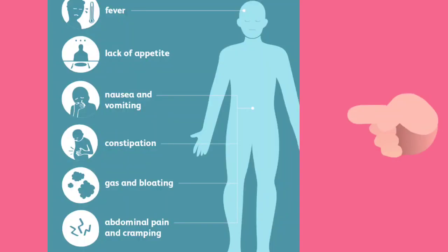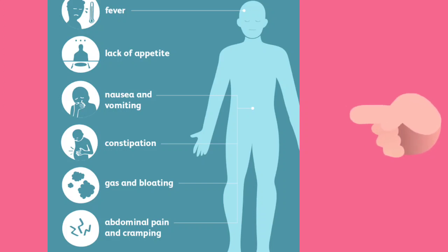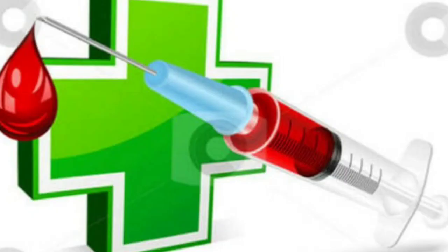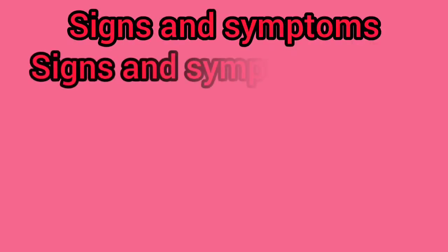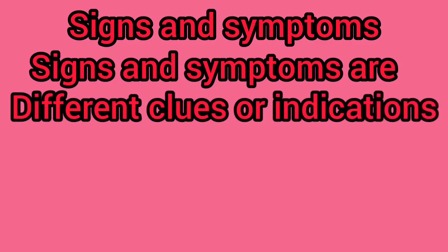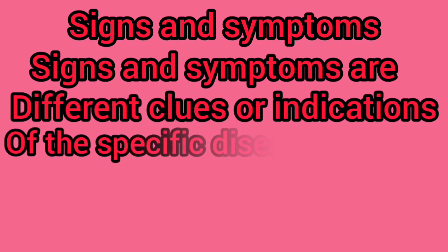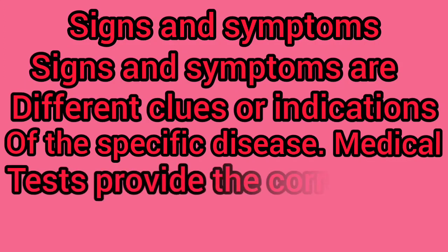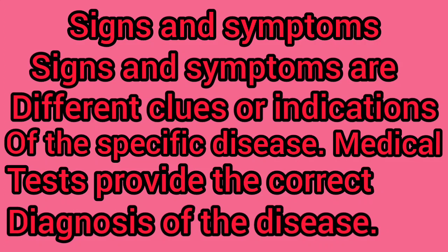This indicates that something is wrong in the body. For example, signs and symptoms can be: fever, headache, body ache, stomach ache, nausea, vomiting — all these symptoms indicate the presence of some disease. Yehi disease ke symptoms doctor ko problem diagnose karne mein easy banate hain. Signs and symptoms are different clues and indications of a specific disease. Medical tests provide the correct diagnosis of the disease.